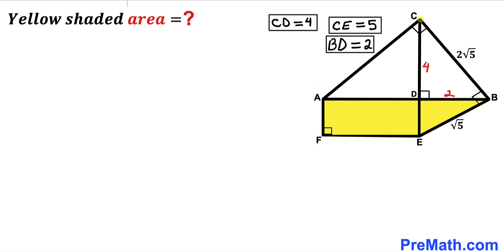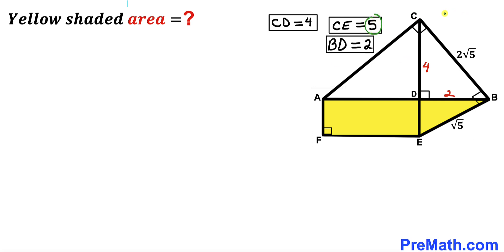We know the whole length CE is 5 units and CD is 4 units, so DE equals 5 minus 4, which gives us DE equals 1 unit.